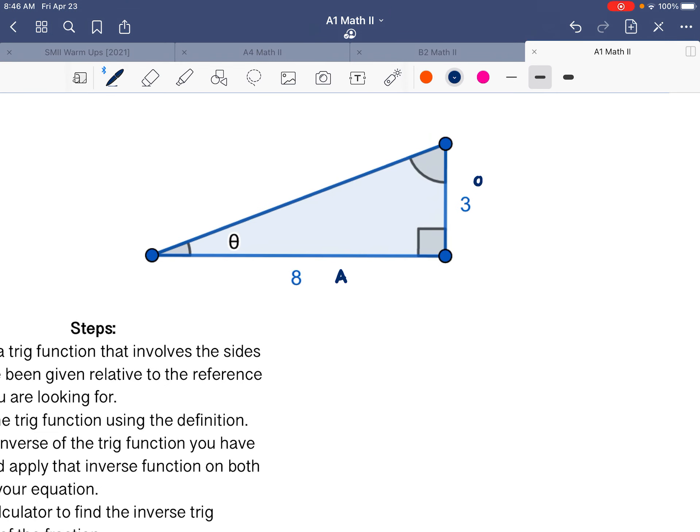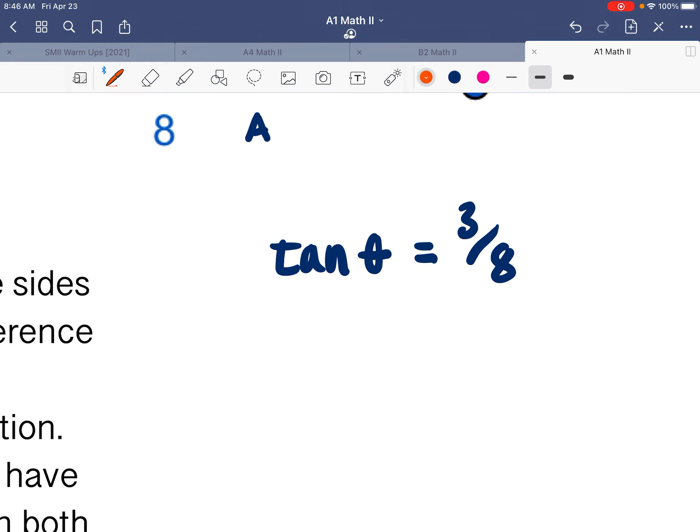So then we write this function. We don't know what the angle is, so we end up with tangent of just theta, that's a variable, equals opposite over adjacent. So 3 over 8. In order to find out what theta is, we need to be able to undo tangent, because theta is inside of tangent right now.